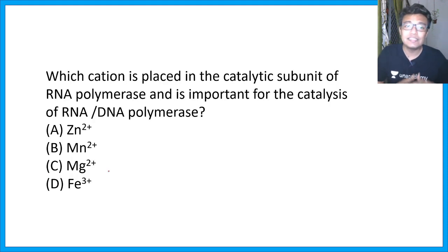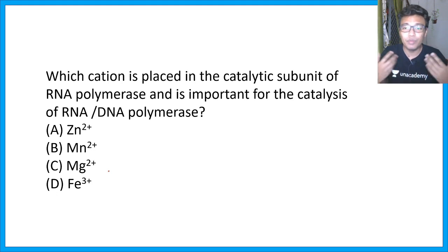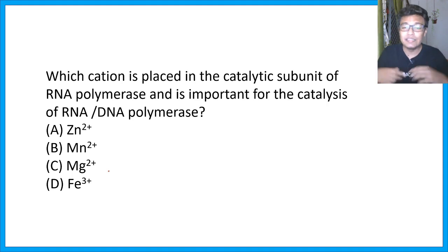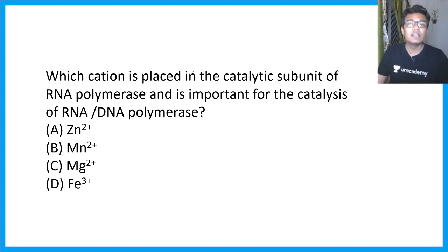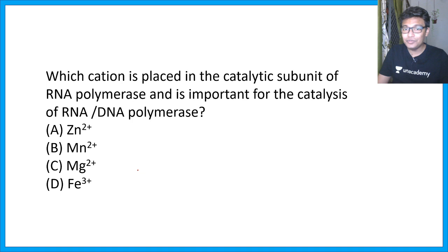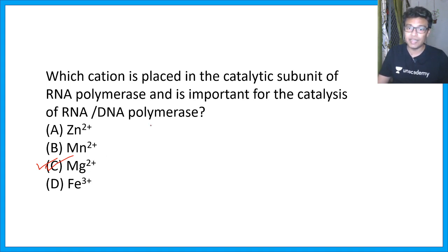Which cation is placed in the catalytic subunit of RNA polymerase and is important for its catalysis? Have you ever used MgCl2 in your PCR reaction? That's your clue. Mg2+ ion is crucial for RNA or DNA polymerase function and polymerase activity.